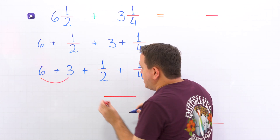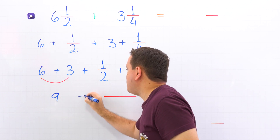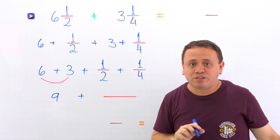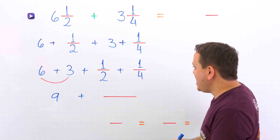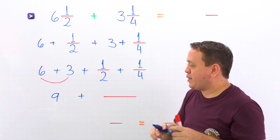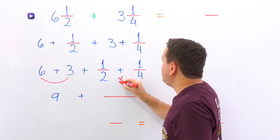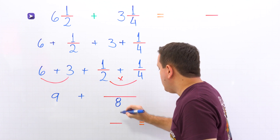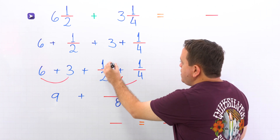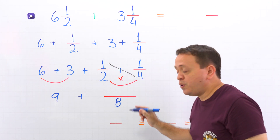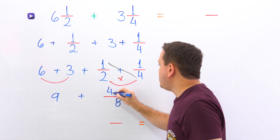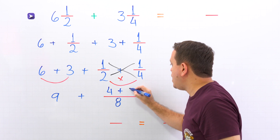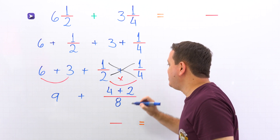6 plus 3 gives us 9, plus. And here we need to add these two fractions with unlike denominators. We are going to use the butterfly method. We start by multiplying the denominators and 2 times 4 gives us 8. Then we are going to cross multiply. On this side, we have 1 times 4, and 1 times 4 gives us 4. Now we put the plus sign and over here, 2 times 1 equals 2.